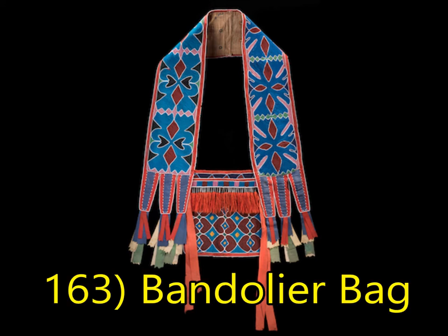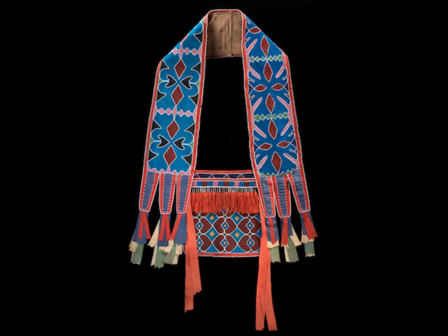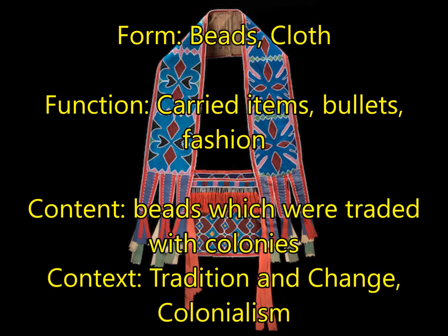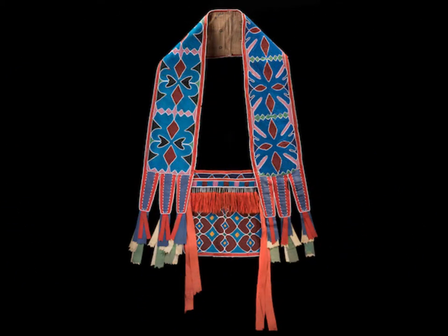This is the Bandolier Bag. For form, it has thousands of tiny glass beads which cover a base of cloth. For function, they were worn for fashion but also served as a pouch to carry items — specifically bullets or ammo from the white colonialists. For content, you can put the bag, the sash, the patterns, and those beads. For context, put tradition and change, because Native Americans changed the way they were sewing items to accommodate the colonialists moving into their area. This is a great symbol of tradition and change in the Indigenous Americas unit.